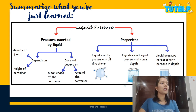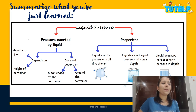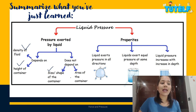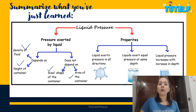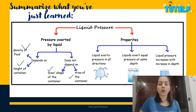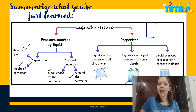To summarize: liquid pressure is the pressure exerted by a liquid; it depends on the density of the fluid and the height of the column, and does not depend on the size, shape, or area of the container. The key properties are: liquid exerts pressure in all directions; liquid exerts equal pressure at the same depth; and liquid pressure increases with increase in depth — the water jet at the base has the highest pressure, followed by the middle and then the top.